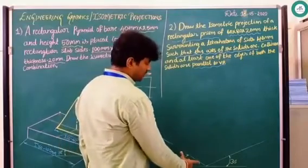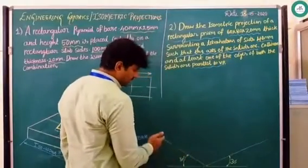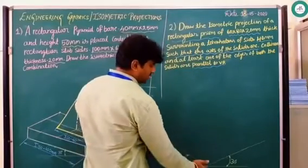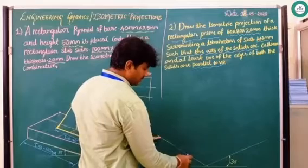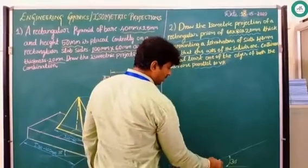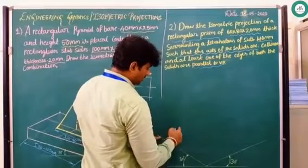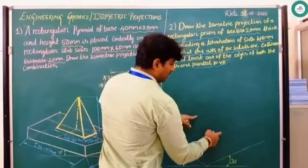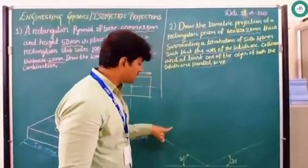Starting with the rectangular prism — 80mm × 60mm × 20mm thick. Take 80 to this side, marking 10, 20, 30, 40, 50, 60, 70, 80. To the right side mark 60: 10, 20, 30, 40, 50, 60. From the corners raise the thickness of 20mm, marking 10 and 20 at each corner. Then from the far point mark 10, 20, 30 up to 80 and join to the common point.